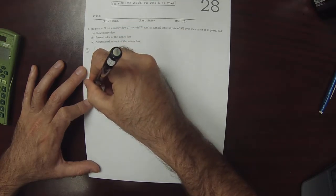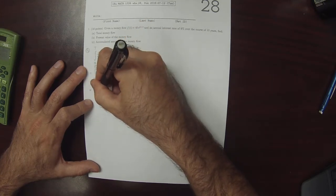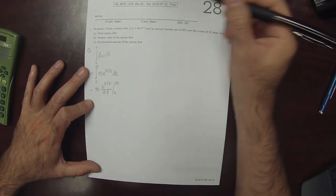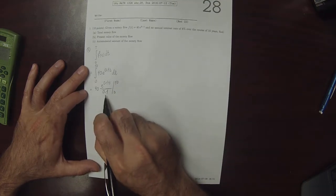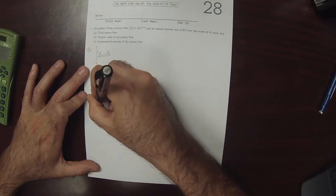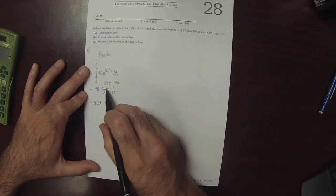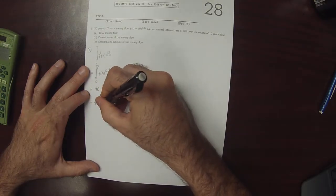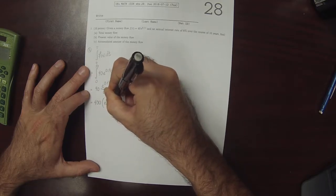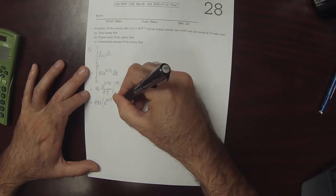So that is 40 exponential 0.1 T divided by 0.1, from 0 to 10. Division by 0.1 is the same as multiplication by 10, so this is 400. And then this, evaluated from 0 to 10, is exponential of 0.1 times 10 minus exponential of 0, which is 1.